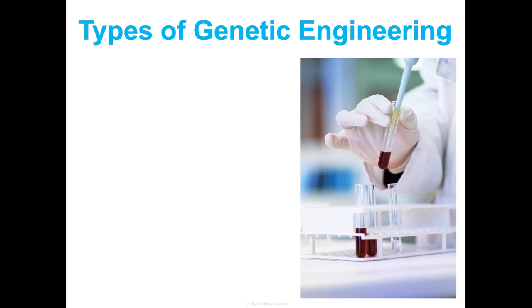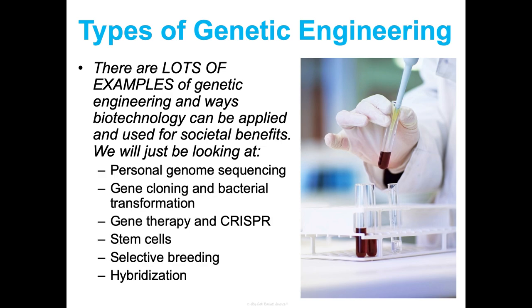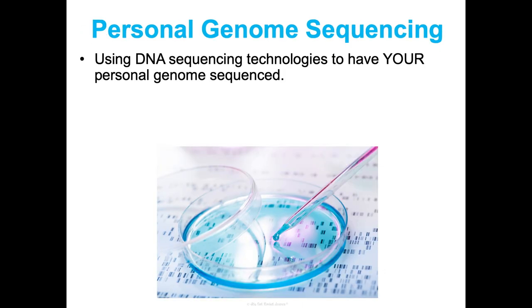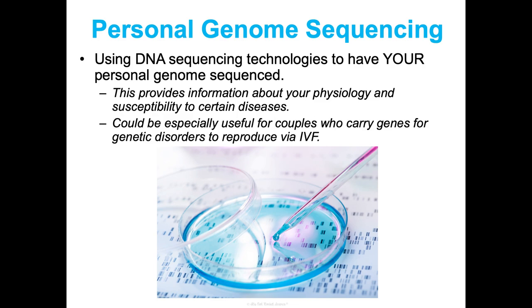We use these techniques to do genetic engineering — manipulating genes in an organism to get desired traits. There are tons of examples of how biotechnology can benefit society. One is personal genome sequencing, using DNA sequencing technologies to have your personal genome sequenced. It provides information about your physiology and susceptibility to certain diseases, and it's especially useful for couples who carry genes for genetic disorders and are trying to reproduce via IVF, or in vitro fertilization — allowing us to make sure an implanted embryo doesn't carry genes for a certain genetic disorder.